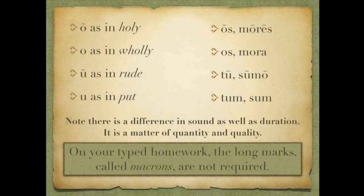Long O was pronounced like the O in holy — so os, mores. Short O is like the hole in holy — os and mora. Long U is like the U in rude — tu and sumo. Short U is like the U in put — tum and sum. Note that there is a difference in sound as well as duration, so it's really a matter of quantity and quality.